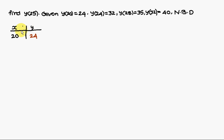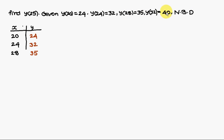First, what we have to do is construct a difference table having the columns: first column as x and the second column as y. For x=20, y is 24; for x=24, y is 32; for x=28, y is 35; for x=32, y is 40.